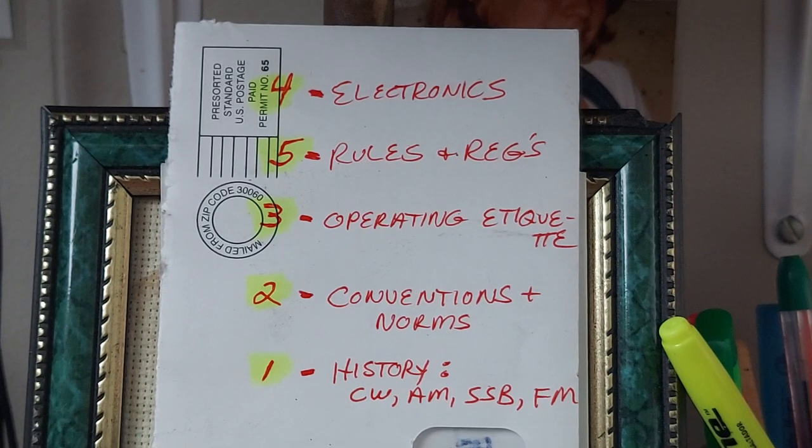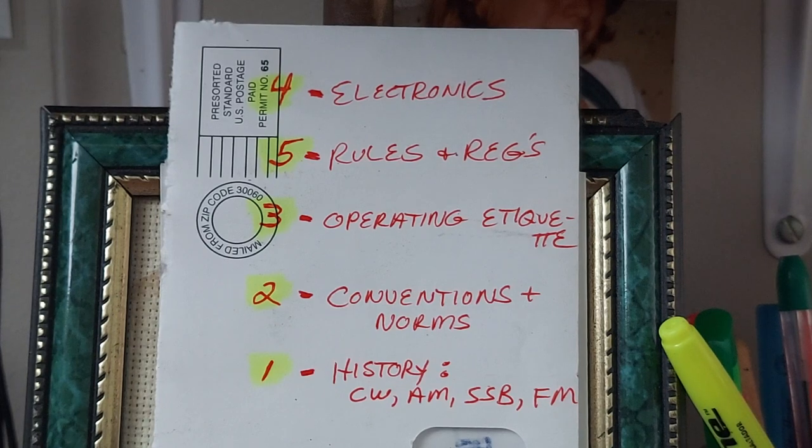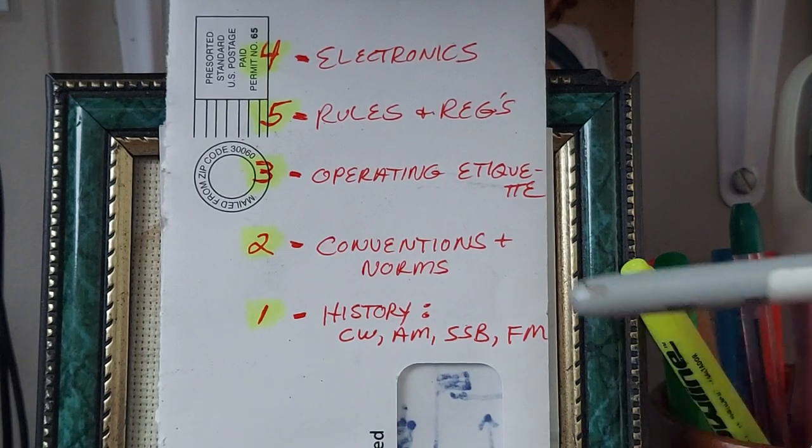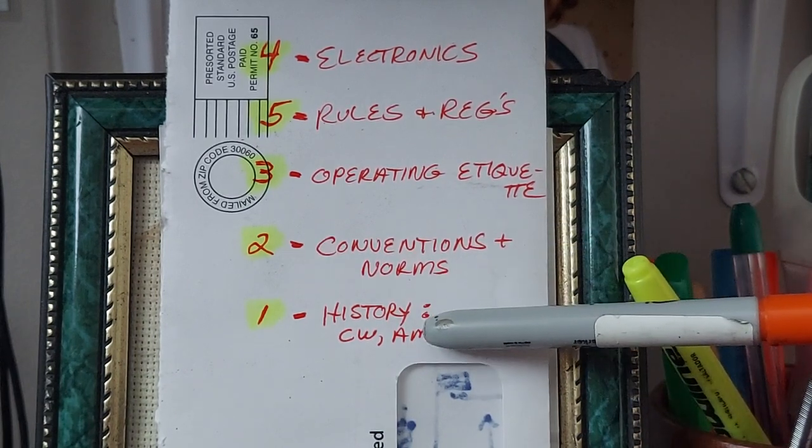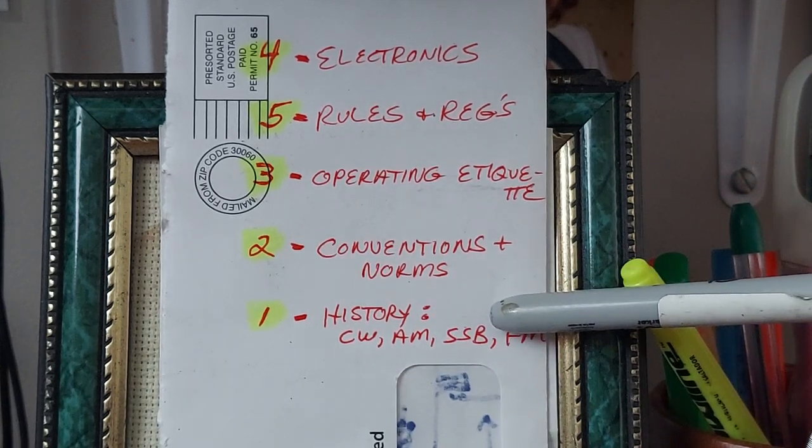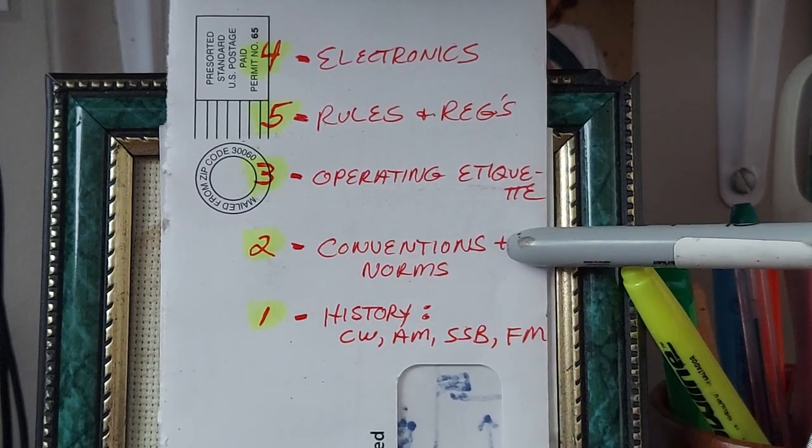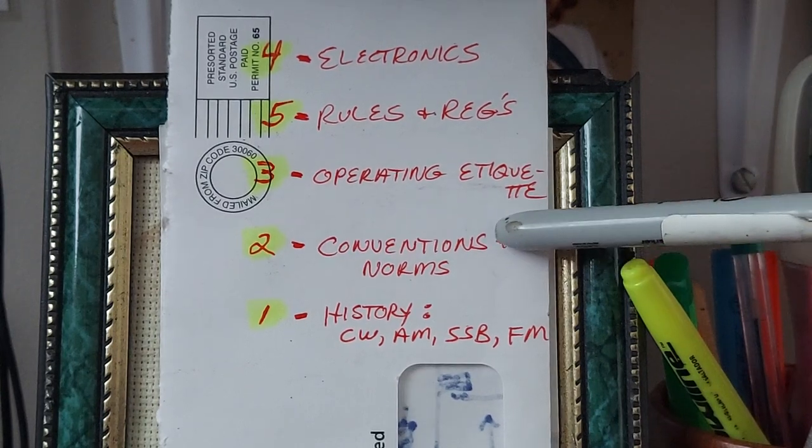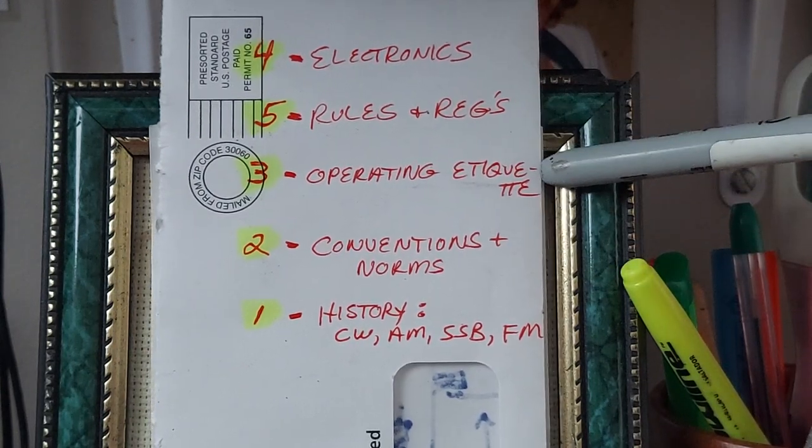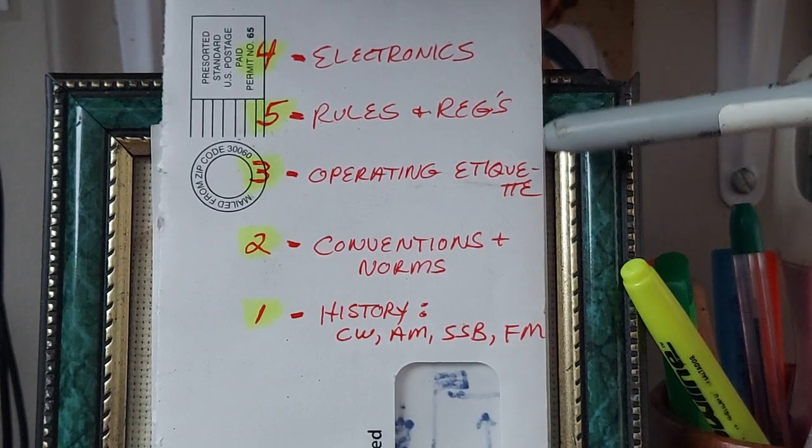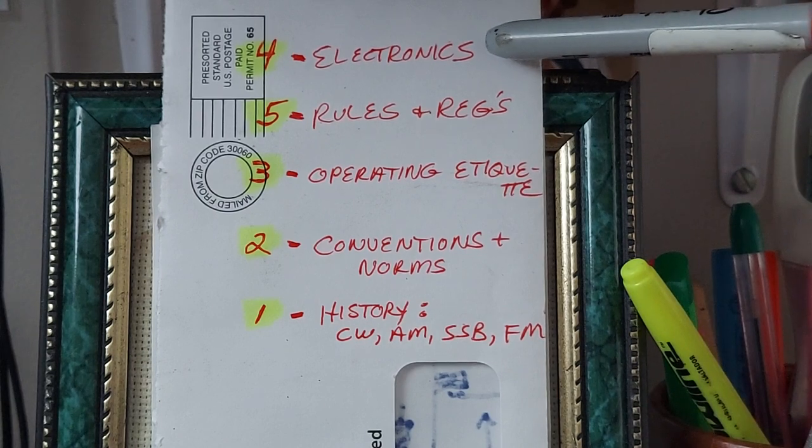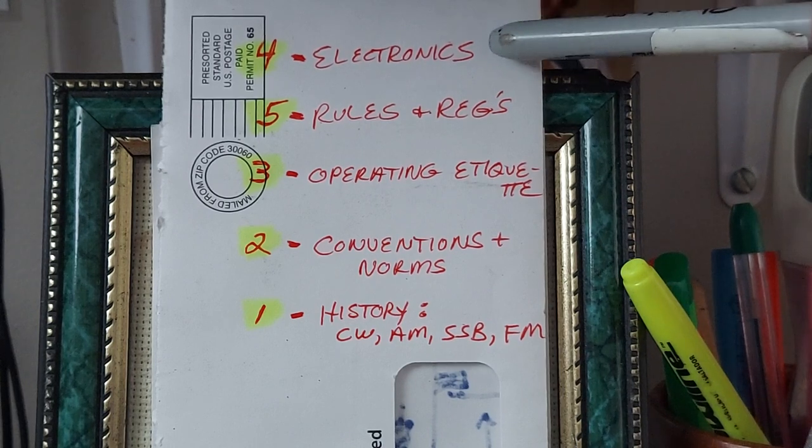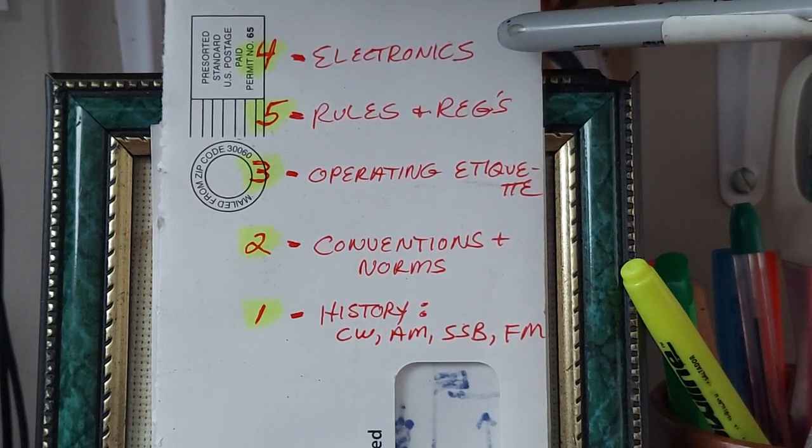Electronics. Last on the list is, of course, rules and regulations. Honestly, I just want you to understand where you came from. If you don't know where you came from, you can't know where you're going. I want you to understand the norms and conventions. So if I call you old man, you don't take offense at it. I want you to operate on the air without being a dick. And I want you to be able to figure out what happened to your shit when it breaks. It's just a piece of wire. It's not rocket science.